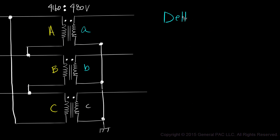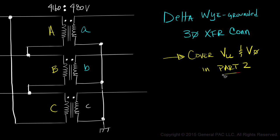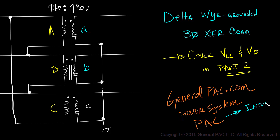And this my friends is a delta Y grounded three phase transformer connection. We'll cover line to line voltage and phase voltage quantities in part two. This module was brought to you by generalpack.com making power system protection, automation and controls intuitive.